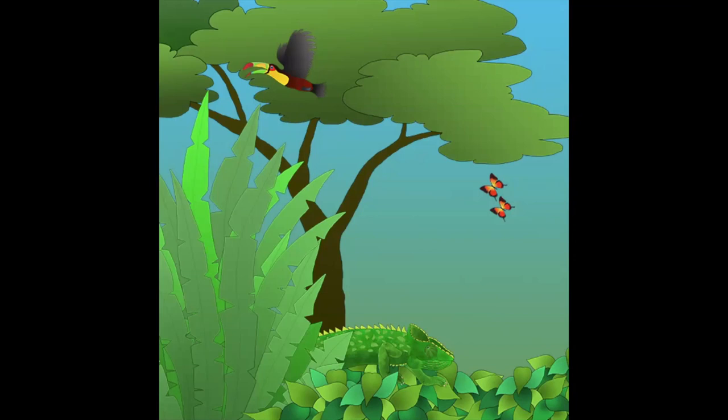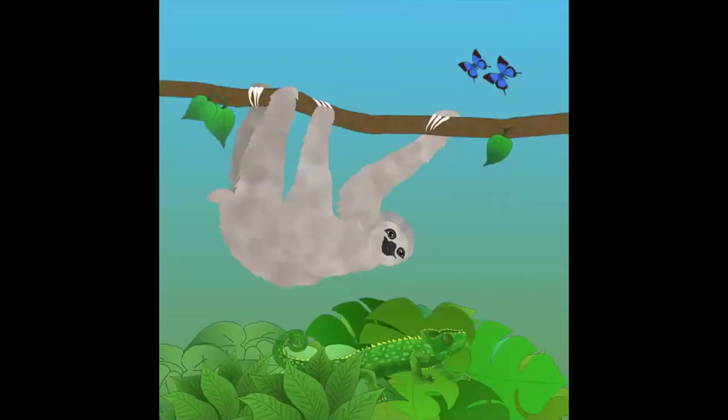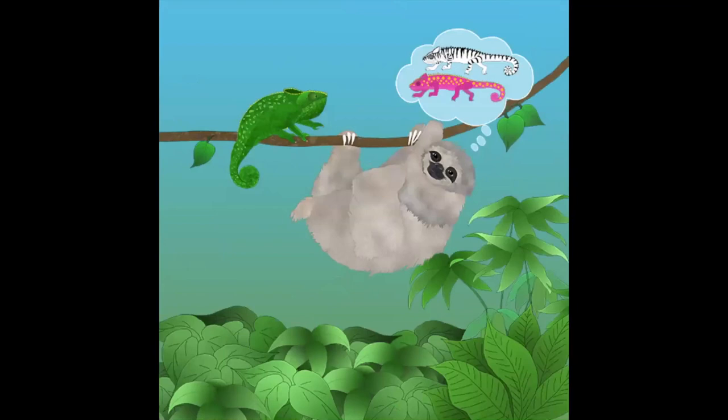Chameleon walked on through the rainforest until he met a sloth who was hanging upside down on the branch of a tree. Sloth was excited. Chameleon, he said. Come here. Show me how you can change your colour. How about you turn pink with yellow spots? Or black and white like a zebra?